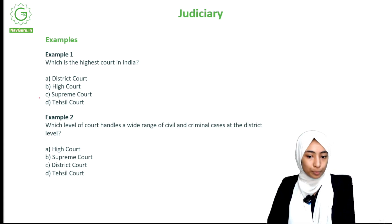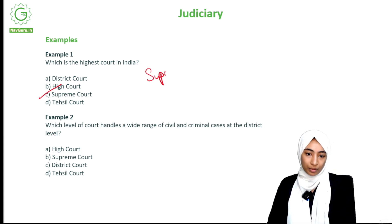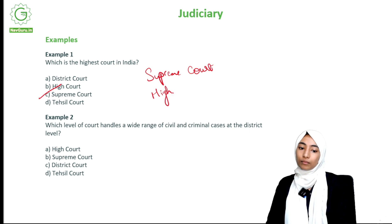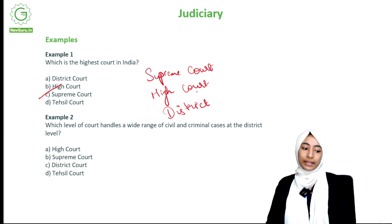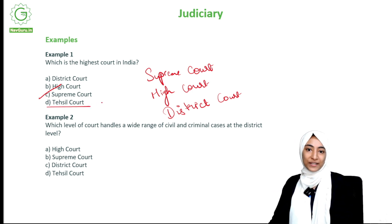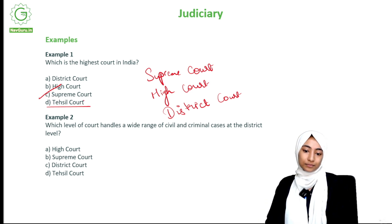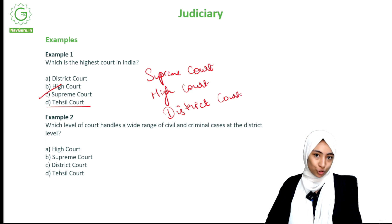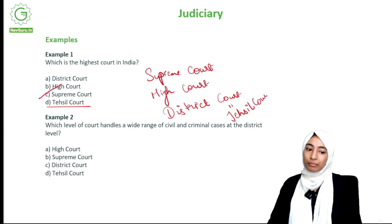The answer is the Supreme Court. The order is: Supreme Court first, then High Court, then District Court. So where does the tassel court come? The tassel court is just another name for the district court.